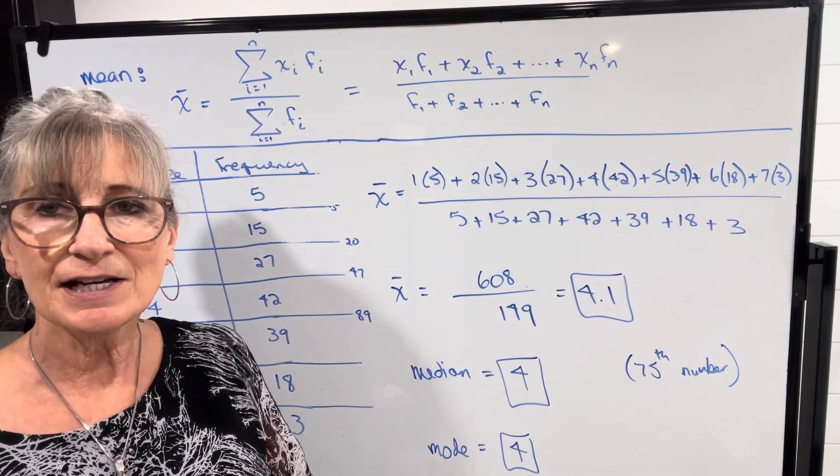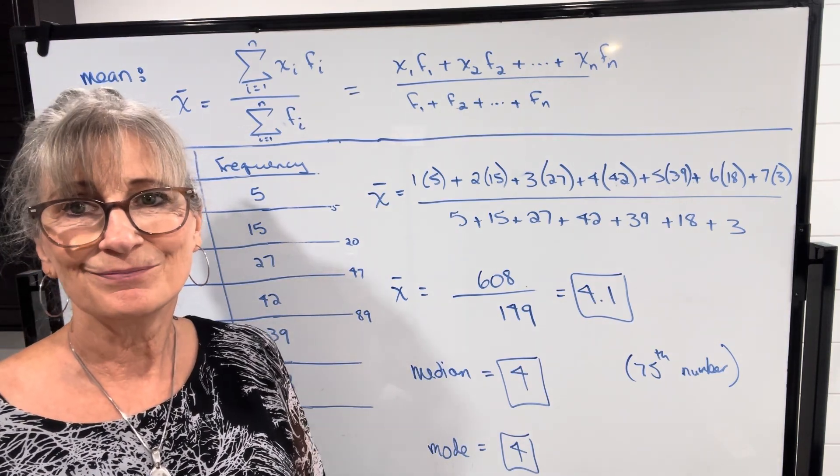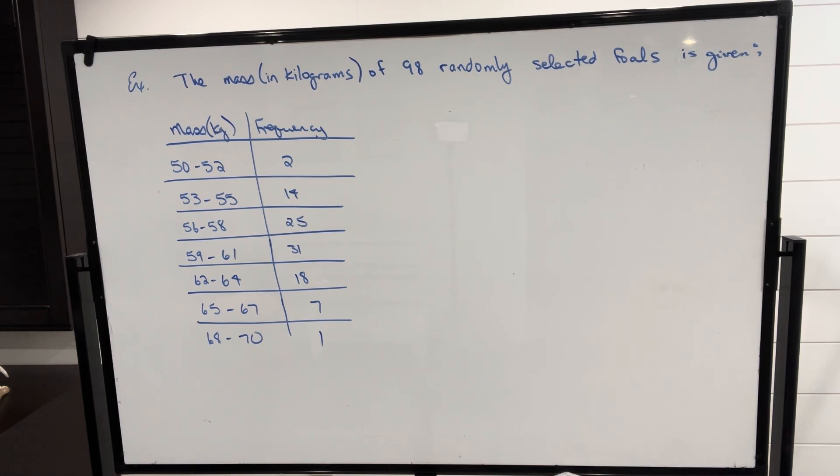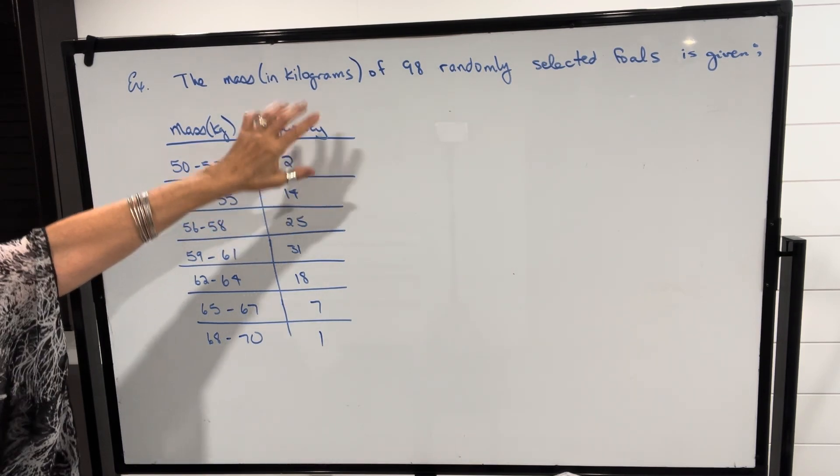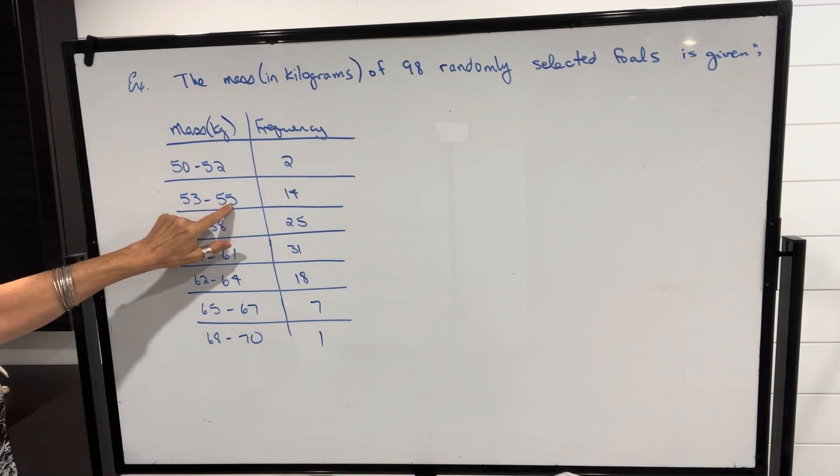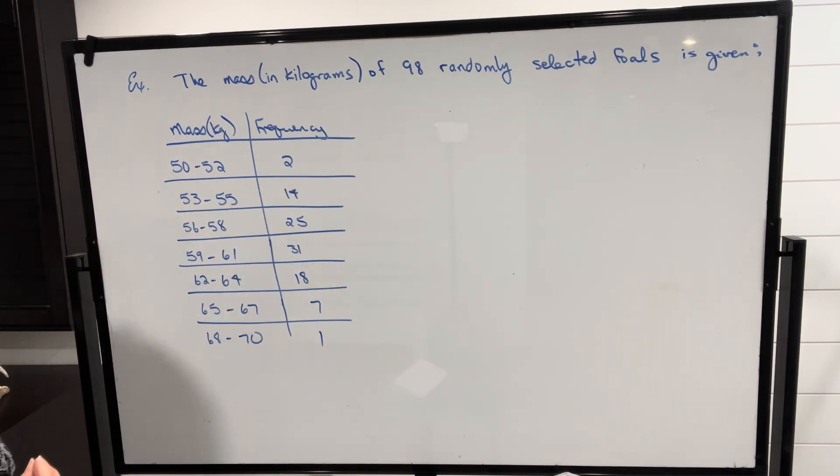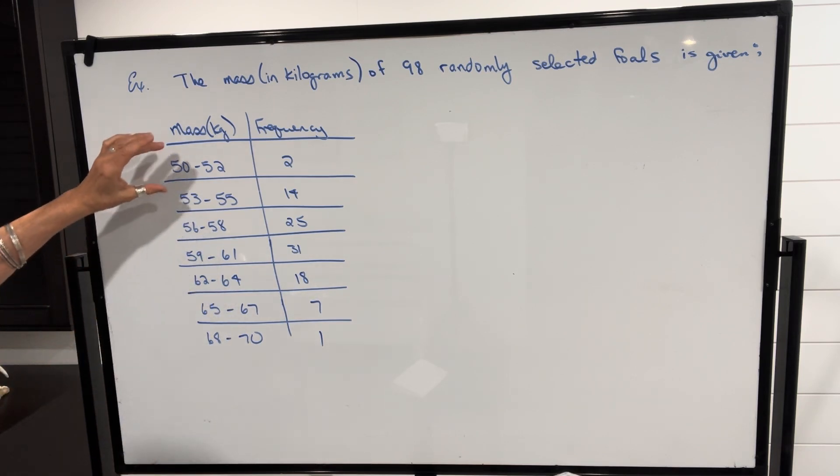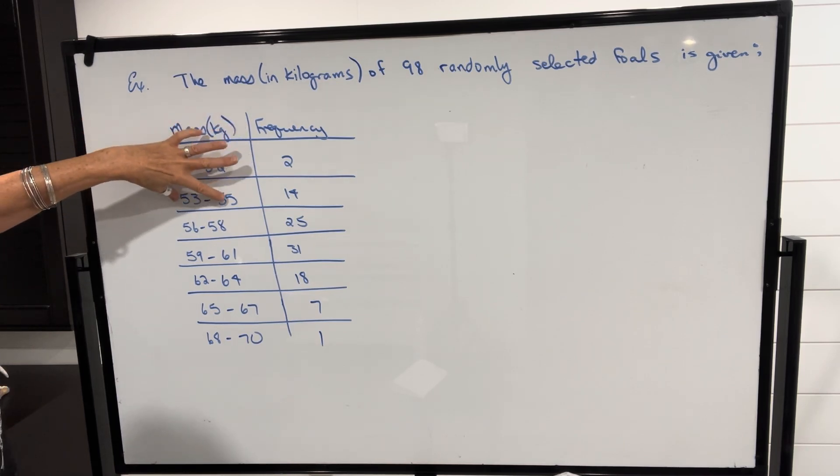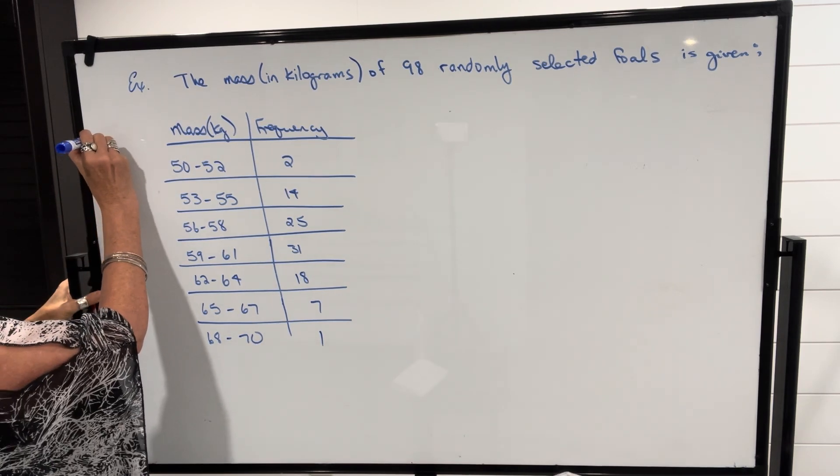Now let's take a look at an example of a frequency distribution with grouped data. This next example says the mass in kilograms of 98 randomly selected foals is given. Rather than a specific mass, there's a range. So a mass from 50 to 52 kilograms, there were two foals out of that sample. From 53 to 55, there were 14 and so on. We're going to use the same formula that we used in the last example. However, we have to find the middle number or the midpoint for each of these range of values and use that in our calculations.